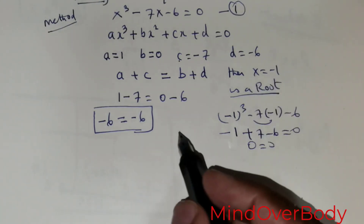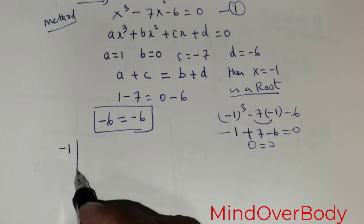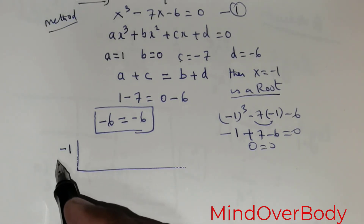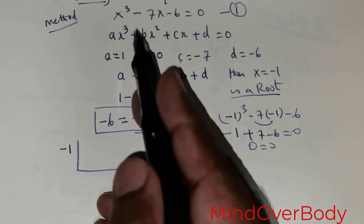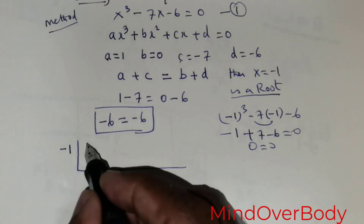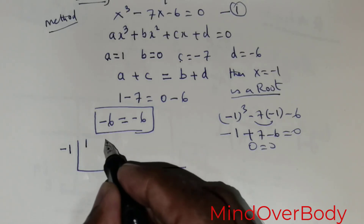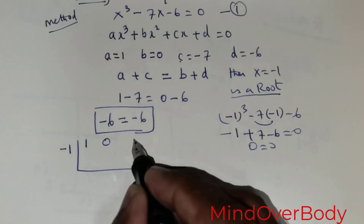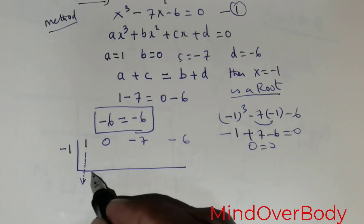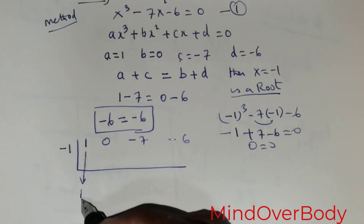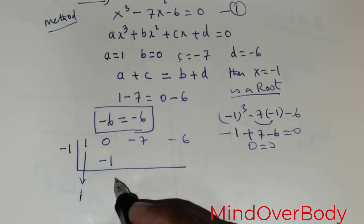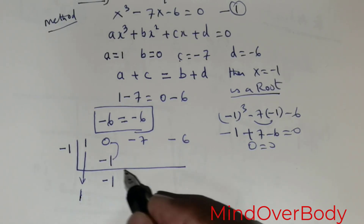Now place negative 1 as the synthetic divisor and rewrite the coefficients starting with the cubic term. Since there is no x squared term, place a 0. We have x term coefficient negative 7 and constant term negative 6. Bring the 1 down and multiply it by negative 1 to get negative 1, then add.